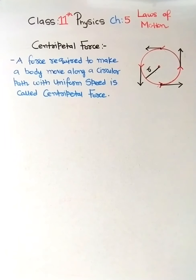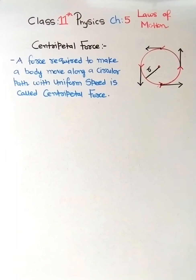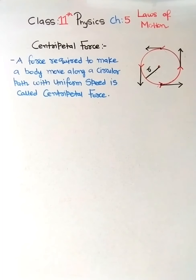Hello everyone, welcome back to this channel. We are studying Class 11 Physics, Chapter 5: Laws of Motion. We have finished all types of friction and its coefficients along with the advantages and disadvantages of friction in the previous video. This video is totally dedicated to the dynamics of uniform circular motion.